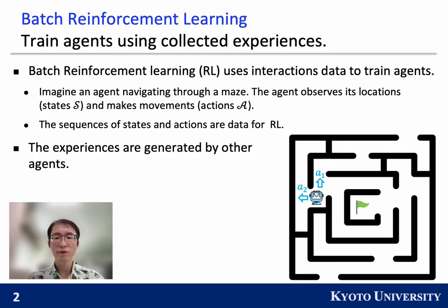Batch Reinforcement Learning uses interaction data to train agents. To understand the setup, consider the navigation task that takes several steps to complete. At each step, the agent observes its location, which corresponds to a state. Given the state, it takes a movement, which corresponds to the action for this step.